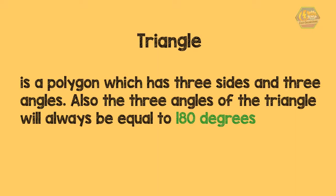A triangle is a polygon which has 3 sides and 3 angles. Also, the 3 angles of a triangle will always be equal to 180 degrees.